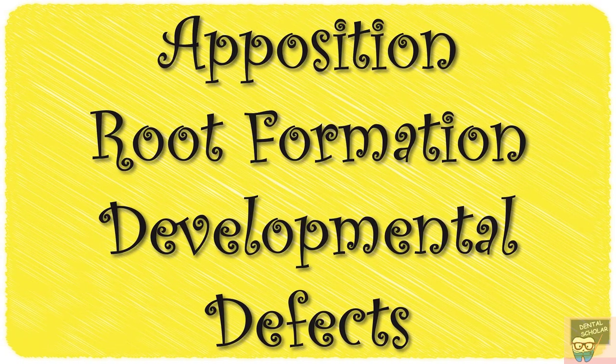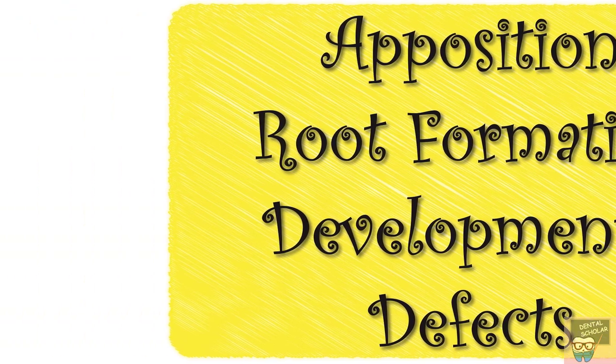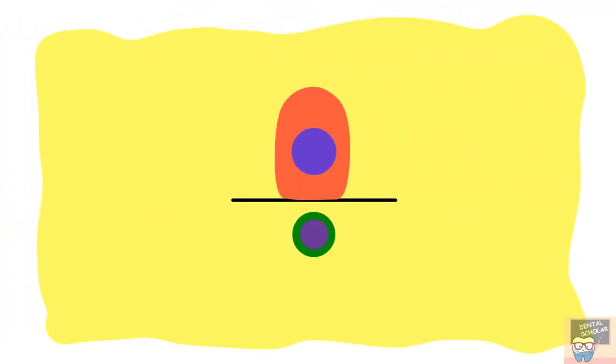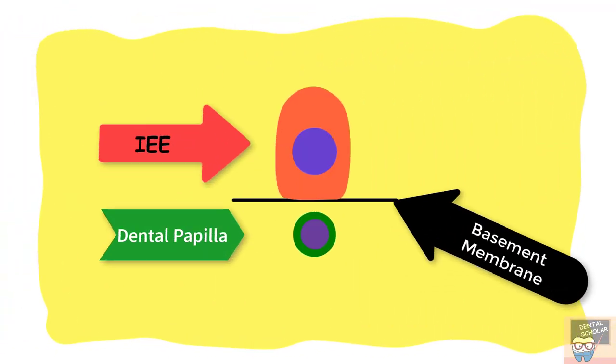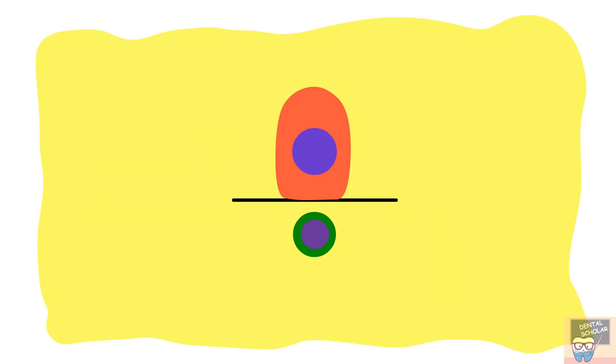Hello everyone, this is the second part of tooth formation. In this video I am going to tell you about apposition, root formation, and a few developmental defects associated with tooth formation. Let's first see the differentiation of the secretory cells in the late bell stage that would lead to the formation of enamel and dentine.